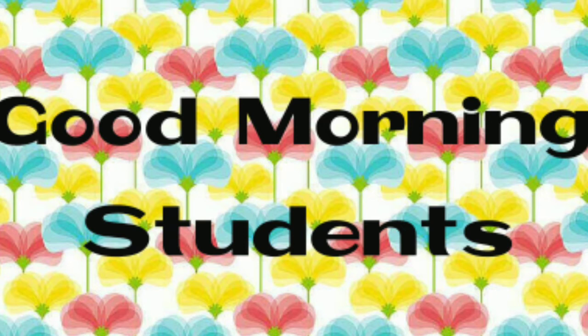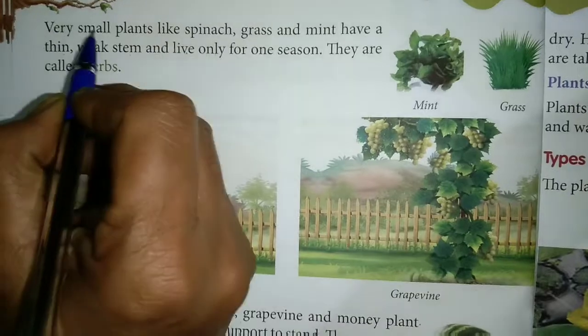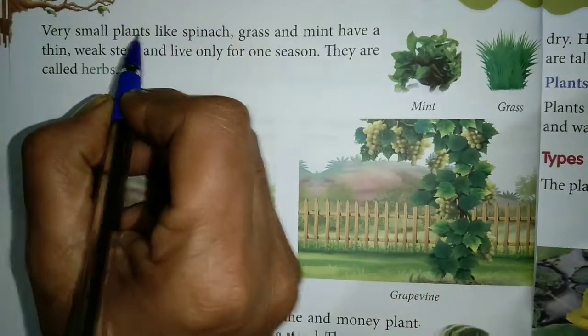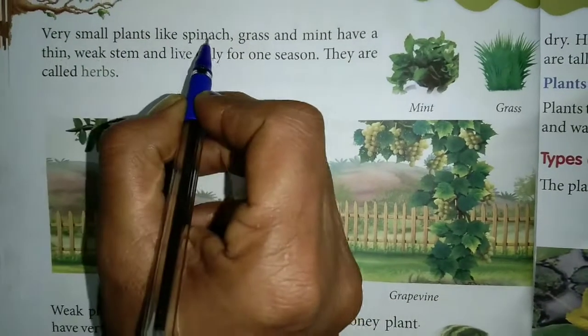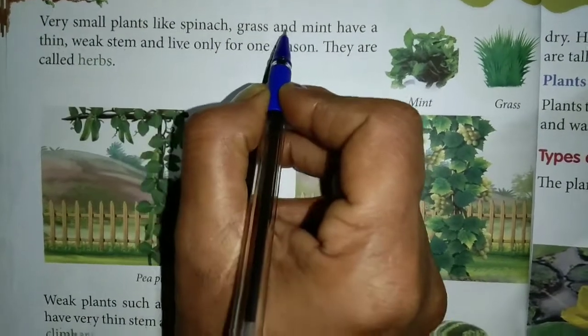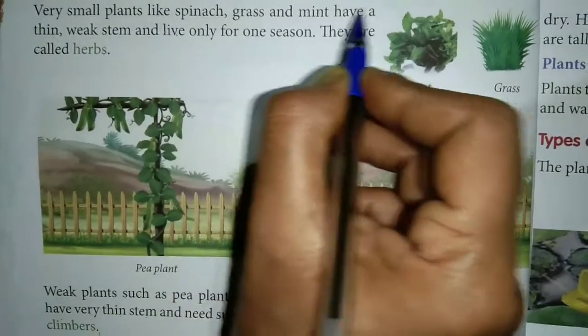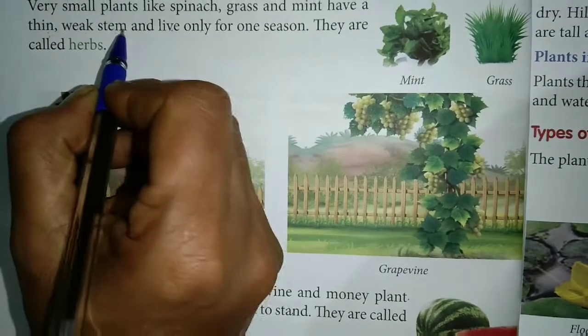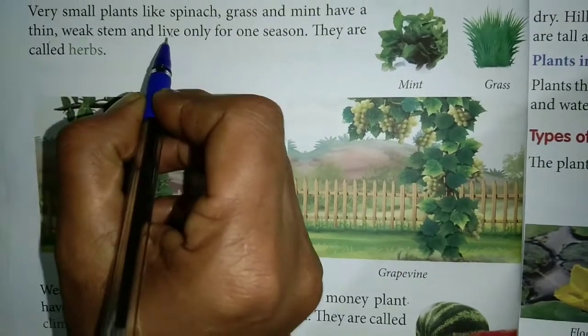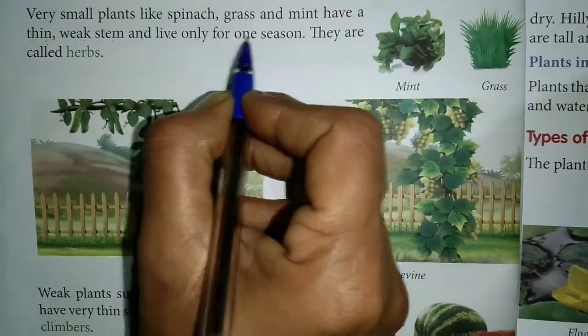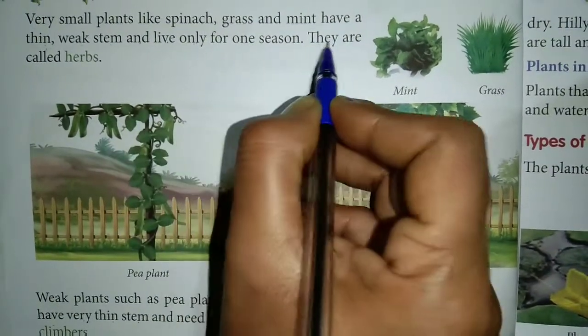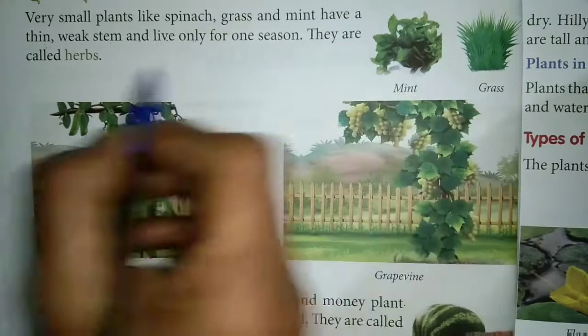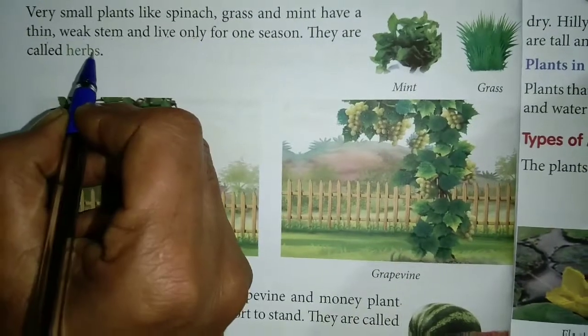Good morning students, today we start our remaining chapter. Very small plants like spinach, grass and mint have a thin weak stem and live only for one season. They are called herbs.